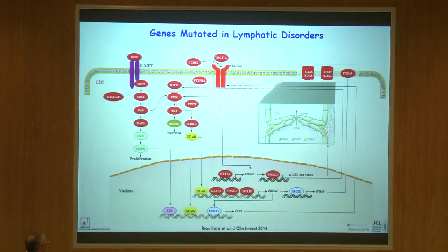There is also another signaling pathway shown in some patients. We have not yet published, but we have mutations in HGF — hepatocyte growth factor — suggesting a second signaling cascade next to VEGFR3 that is also very important for lymphatic development and function.